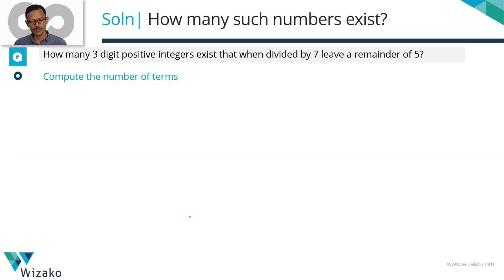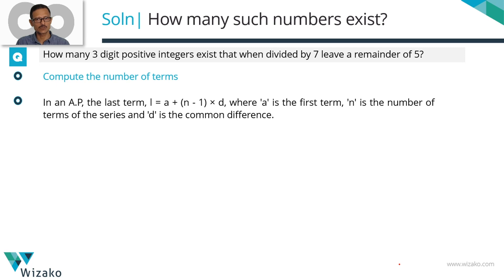Now all that is left is to compute the number of terms. We're going to be using the formula to compute the last term of an arithmetic progression or the nth term of an AP. The last term or the nth term is the first term plus n minus 1 times the common difference. Let's plug in all the data that we have. The last term L equals 999. The first term A equals 103 plus n minus 1 times the common difference equals 7.